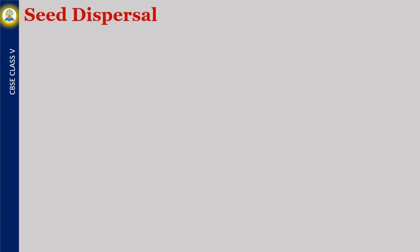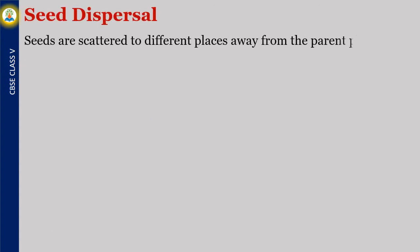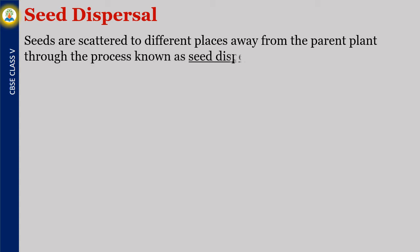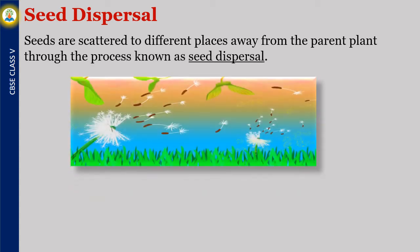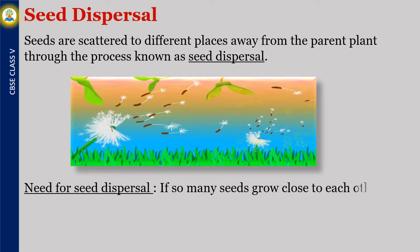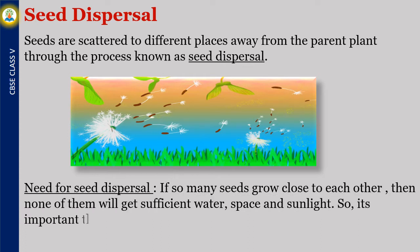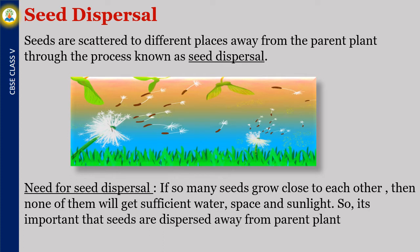Seed Dispersal. Seeds are scattered to different places away from the parent plant through the process known as seed dispersal. If so many seeds grow close to each other, then none of them will get sufficient water, space, and sunlight. So it's important that seeds are dispersed away from the parent plant.